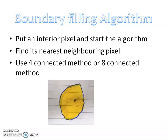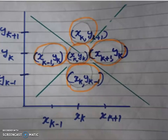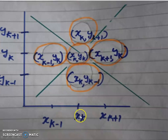Next is the boundary filling algorithm. Here, one picture is shown. We have to put an interior pixel — select any interior pixel XY — and start the algorithm. We find the nearest neighboring pixels using either the 4-connected method or the 8-connected method. In the 4-connected method, the neighboring pixels of a pixel at coordinate (XK, YK) are: the top pixel (XK, YK+1), the bottom pixel (XK, YK−1), the right pixel (XK+1, YK), and the left pixel (XK−1, YK) — that is, 4 connected pixels.